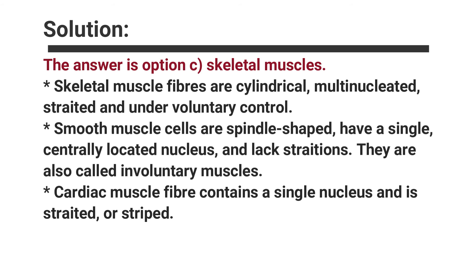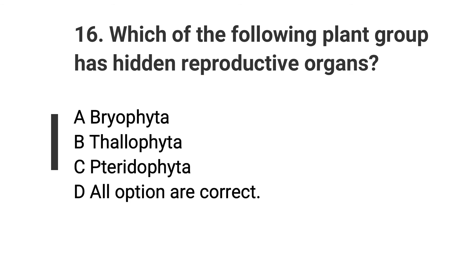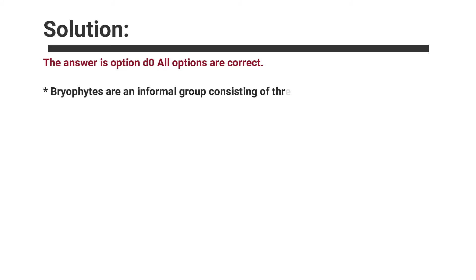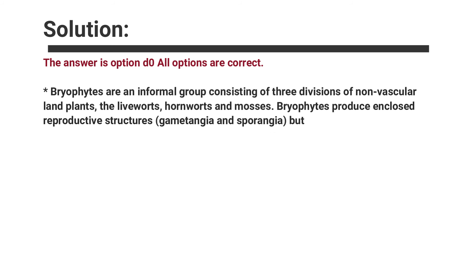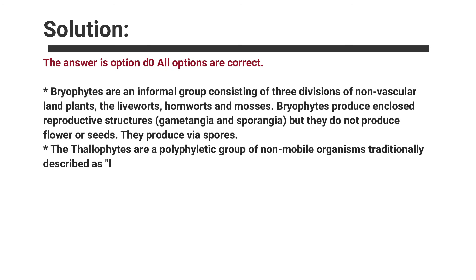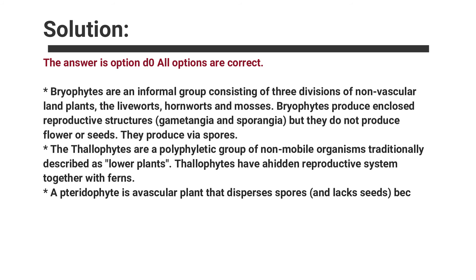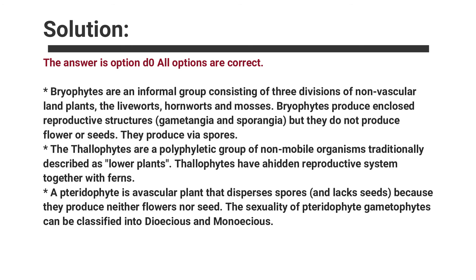Cardiac muscle fiber contains a single nucleus and is striated. Question number sixteen: Which of the following plant groups has hidden reproductive organs? Options are A. Bryophyta, B. Thallophyta, C. Pteridophyta, D. All options are correct. The answer is option D, all options are correct. Bryophytes produce enclosed reproductive structures — gametangia and sporangia — but do not produce flowers or seeds; they reproduce via spores. Thallophytes have a hidden reproductive system. A pteridophyte is a vascular plant that disperses spores and lacks seeds, producing neither flowers nor seeds.